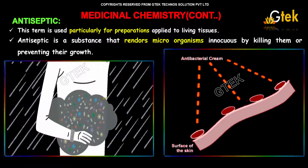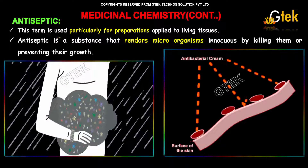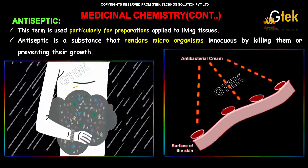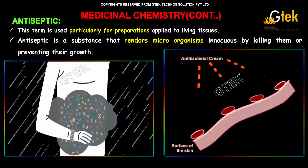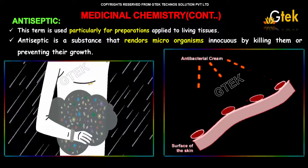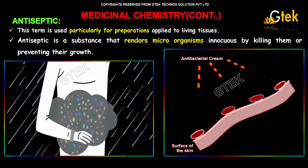Let us study about antiseptics. This term is used particularly for preparations applied to living tissues. An antiseptic is a substance that renders microorganisms inactive by killing them or preventing their growth. They completely destroy the microorganisms in the human body.